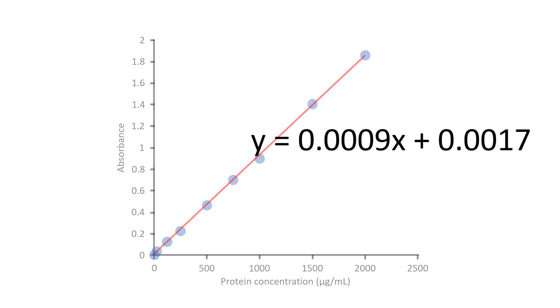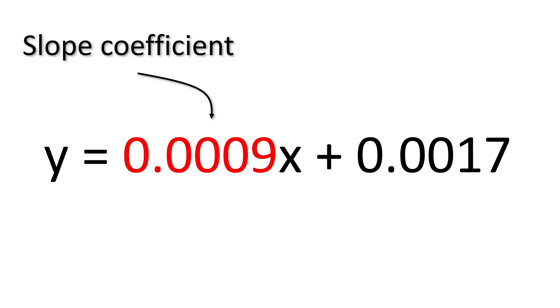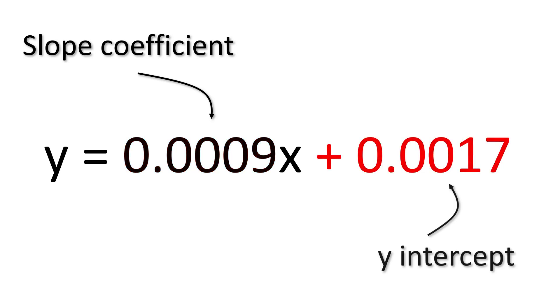Let me explain this equation in a little more detail. What I have for my example is y equals 0.0009x plus 0.0017. The 0.0009 in this instance is the slope coefficient and the plus 0.0017 is the y intercept. In other words the point in which the line crosses the y axis.